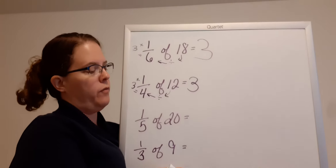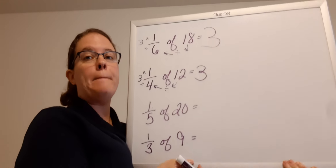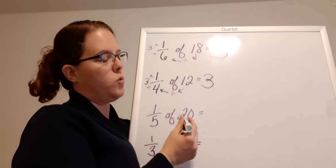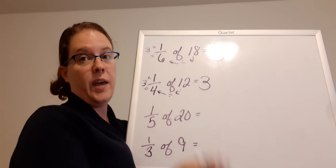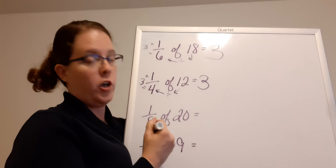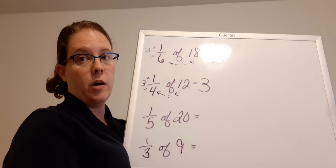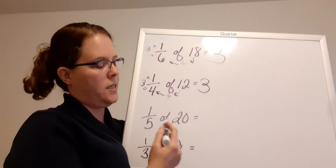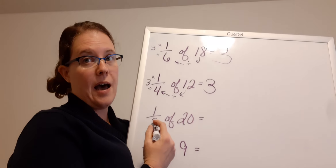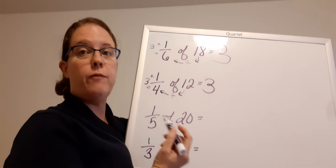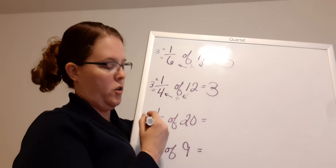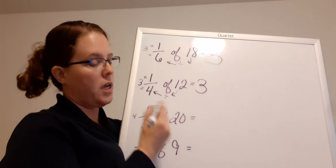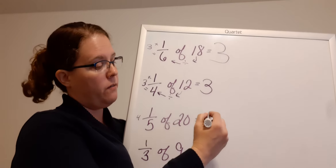Let's do 1/5 of 20. I hope you're remembering this stuff. So 1/5 of 20 — that means I have 20 things and I want to know what 1/5 of them are, how many is in 1/5. So I do 20 divided by 5. Good — 4. Now you don't have to write that 4 over there, but if it helps you, go ahead. 4 times 1 is 4.